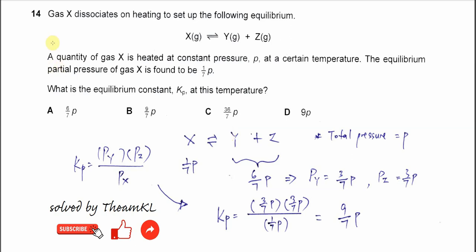Question 14. Gas X dissociates on heating to set up the following equilibrium: X forms Y and Z. A quantity of gas X is heated at constant pressure P. This is the total pressure. At a certain temperature, the equilibrium partial pressure of X now is 1 over 7 P.